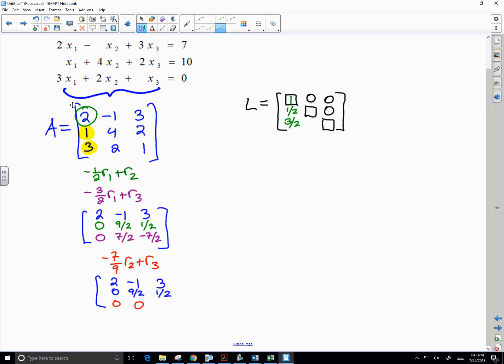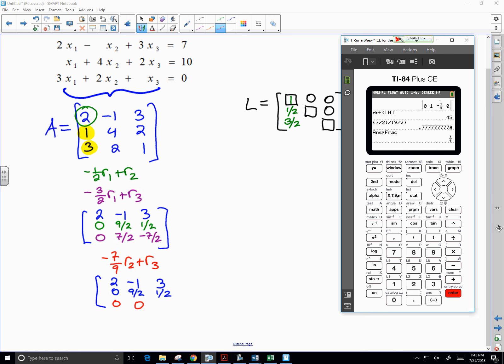So then you have to do negative 7 ninths times one half plus negative 7 half. That's maybe not fun.